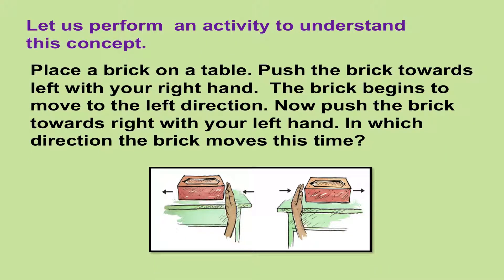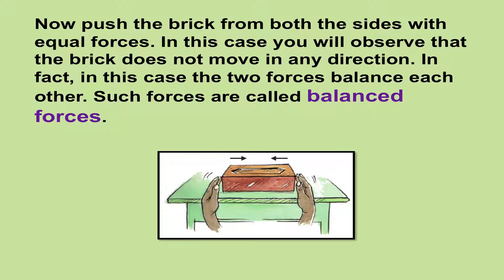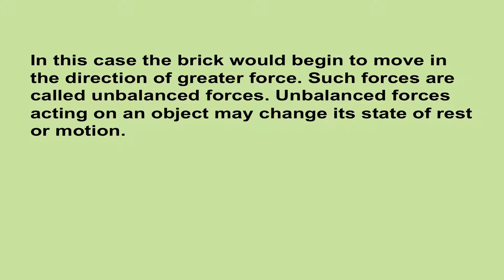Let us perform an activity to understand this concept. Place a brick on a table. Push the brick towards left with your right hand and the brick begins to move to the left direction. Now push the brick towards right with your left hand and it will move in the right direction. Now push the brick from both sides with equal forces. You will observe that the brick does not move in any direction. In fact, the two forces balance each other. Such forces are called balanced forces. When the two opposite forces acting on the brick are of different magnitudes, the brick would begin to move in the direction of greater force. Such forces are called unbalanced forces. Unbalanced forces acting on an object may change its state of rest or motion.